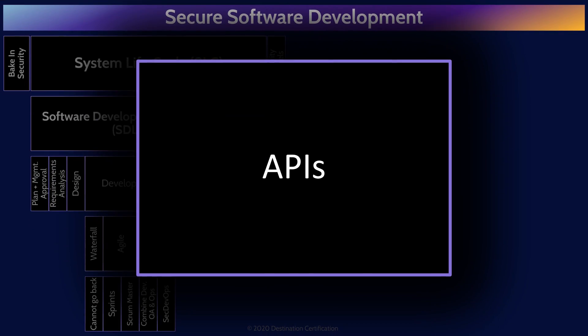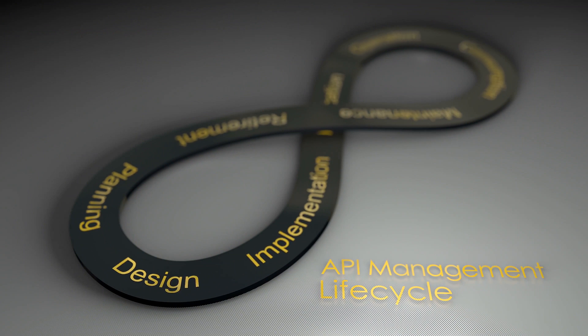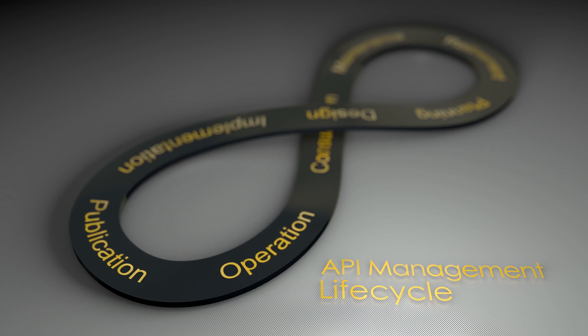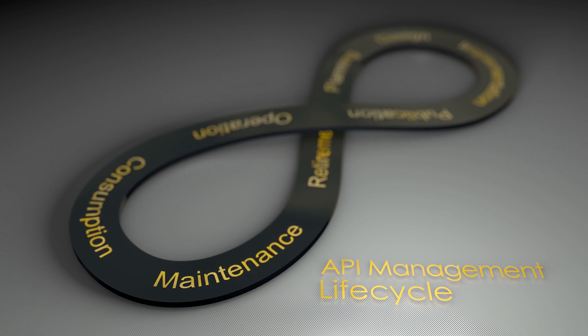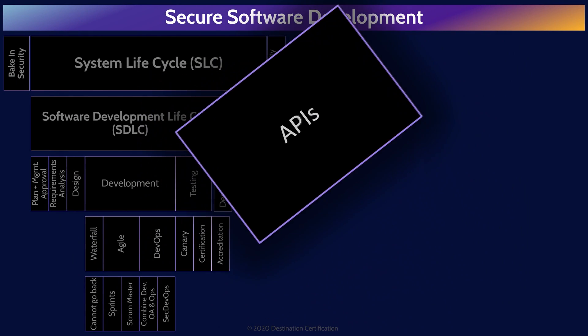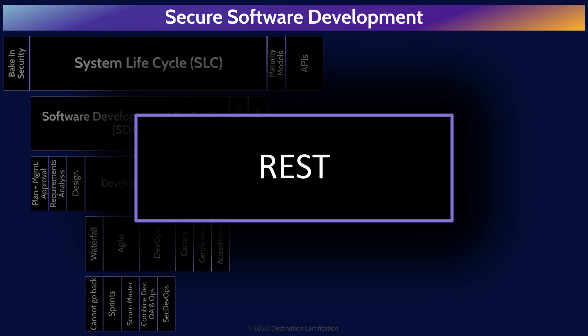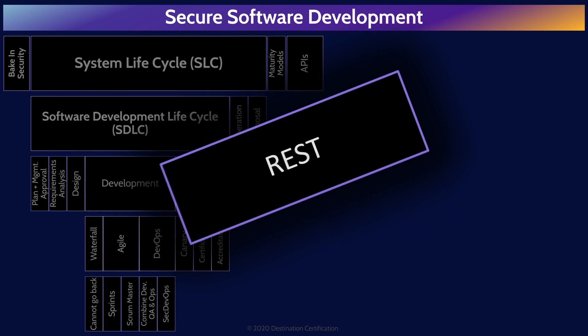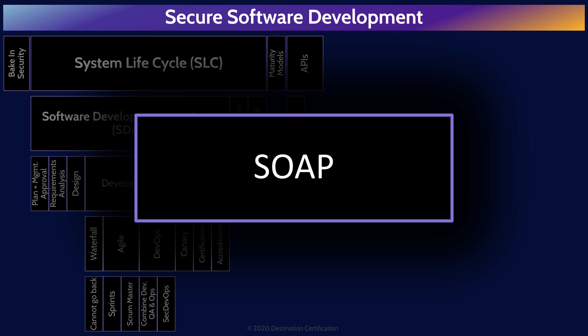Now let's talk about Application Programming Interfaces, APIs, which are the system of tools and resources that allow two applications — for example a client and a server — to talk to each other across a network. APIs are used pervasively in software development as they enable developers to make repetitive yet complex processes highly reusable with just a little bit of code. There are two major protocols used for creating APIs: REST and SOAP. Representational State Transfer (REST) is the most commonly used and is lightweight and fast. Simple Object Access Protocol (SOAP) is far more complex and heavyweight, but accordingly provides a lot more capabilities.